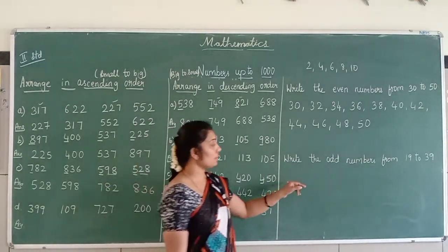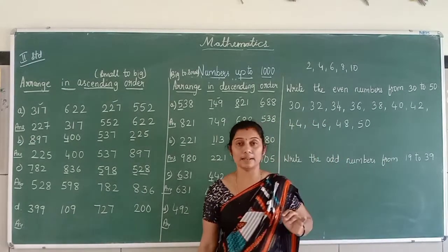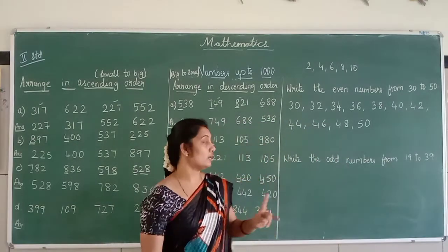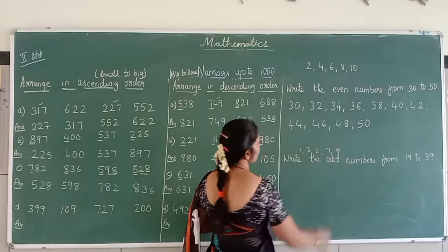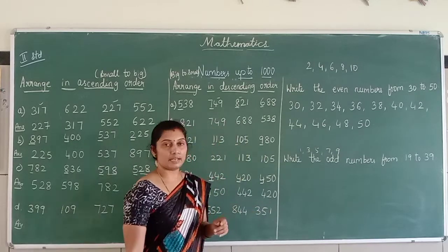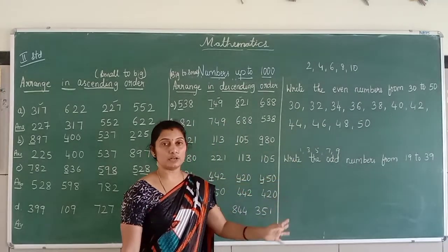Now here we have to write the odd number. Odd number means which is unpaired. Like always odd number starts from 1, 3, 5, 7, 9. Okay? So it is unpaired. You can't pair at all.